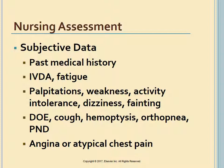Obtain a thorough health history including past medical history of rheumatic fever, infective endocarditis, congenital defects, heart attack, chest trauma, cardiomyopathy, syphilis, Marfan syndrome, and streptococcal infections. Functional health patterns include health perception (IV drug use, fatigue), and activity and exercise assessment for palpitations, generalized weakness, activity intolerance, dizziness, fainting, exertional dyspnea, cough, hemoptysis, and orthopnea.